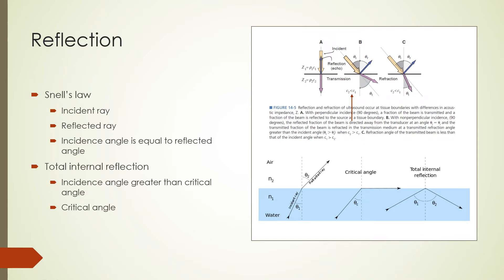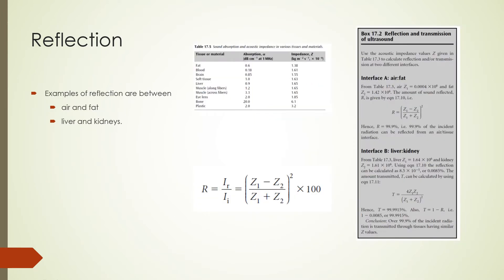The critical angle is the angle at which there is no reflected or refracted ray. If the critical angle is exceeded, there is total internal reflection. When an ultrasound wave crosses from one medium to another, there is partial reflection of the incident wave at the interface. The amount of reflection can be calculated using a formula based on acoustic impedances Z₁ and Z₂ between different tissues. Sample calculations are shown for air-fat and liver-kidney interfaces.